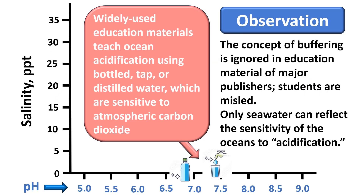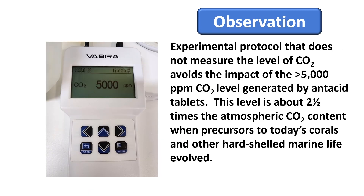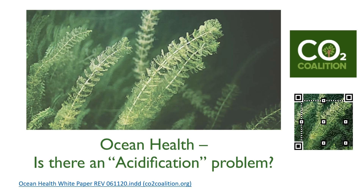It is still worth noting that educational material from major publishers either ignore or purposefully avoid the impact of buffering, which misleads students on the real potential harm to ocean biota. Only an experiment that uses seawater can accurately reflect the sensitivity of the oceans to acidification. Experimental protocol that does not measure the level of CO2 avoids the impact of the greater than 5,000 parts per million of CO2 level generated by antacid tablets — a level about 2.5 times that of the atmospheric CO2 content when precursors to today's corals and other hard-shelled marine life evolved. For a thorough overview of the impact of this deceptively described acidification on ocean life, see the Ocean Health White Paper published by the CO2 Coalition.